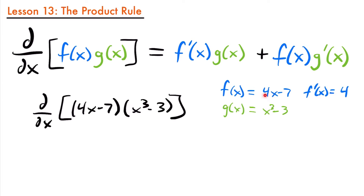The derivative of 4x is 4, and the derivative of negative 7 is 0, so we're just left with 4. Then the derivative of g of x, g prime of x, would be equal to 3x squared, because we have x cubed — multiply the exponent down to get 3x, then subtract 1 from the exponent to get squared. The derivative of negative 3 is 0, so we're left with just 3x squared. Now we have f of x, f prime of x, g of x, and g prime of x.